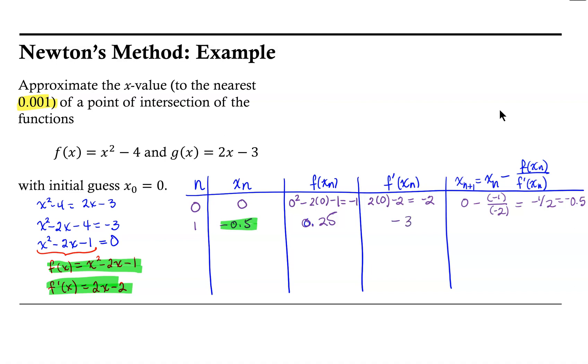So then our new approximation is -0.5 minus 0.25 divided by -3. And that is approximately -0.4167.